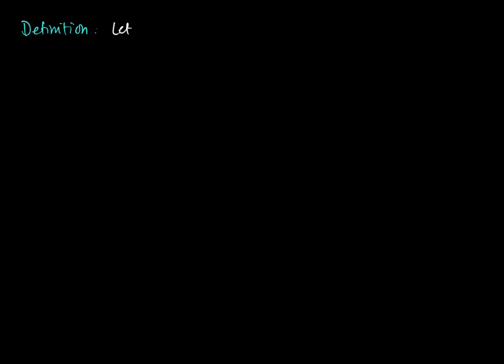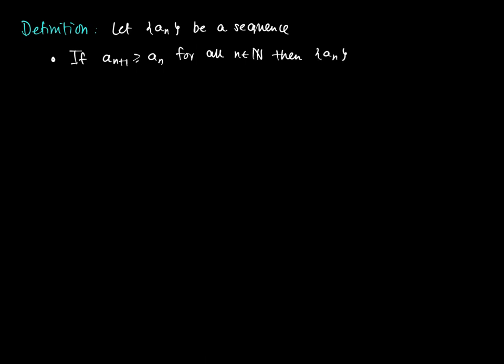Here we discuss monotonicity properties of a sequence. Let a_n be a sequence where n ranges from 1 to infinity and is a natural number. If a subsequent element a_{n+1} is always larger than a_n for all n in the natural numbers, then we call the sequence monotonically increasing.